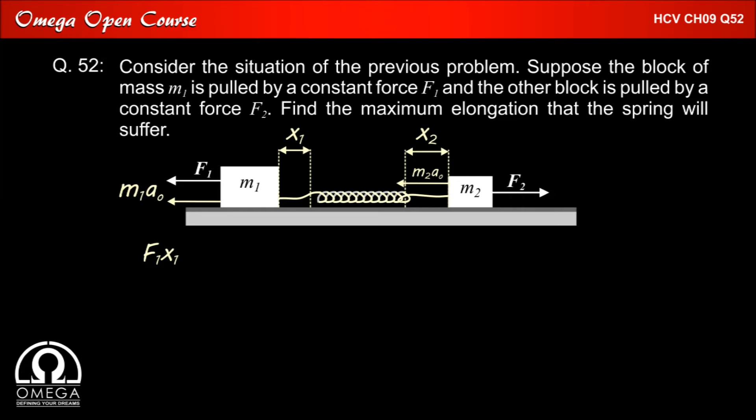Since M1 is displaced by distance x1 towards left, the work done by force F1 is equal to F1 x1. Similarly as M2 is displaced towards right by distance x2, the work done by force F2 is equal to F2 x2.